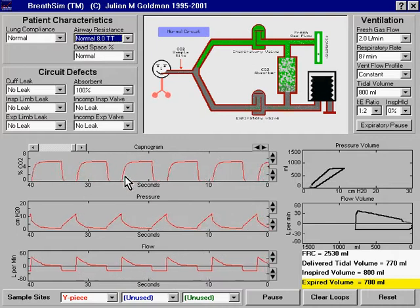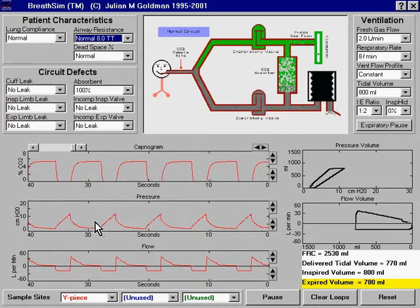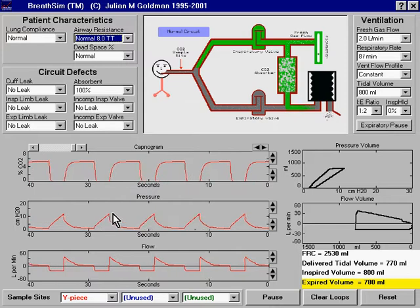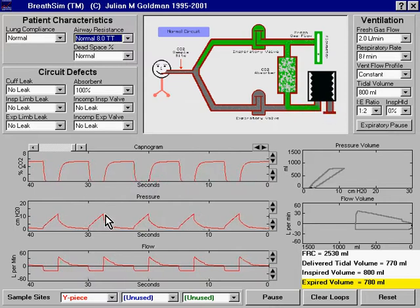Here's the normal capnogram and the airway pressure waveform. We can see that the peak airway pressure is approximately 12 centimeters of water.